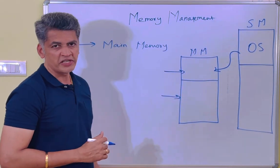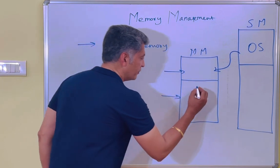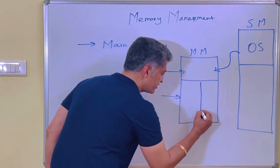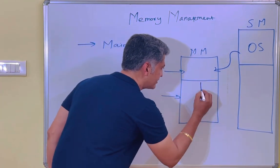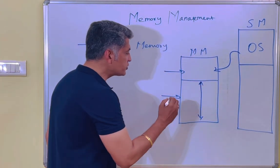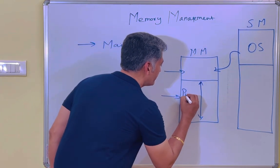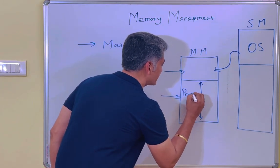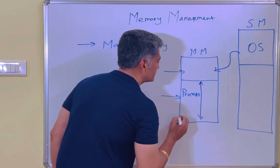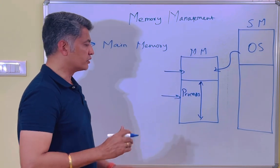So this is the major impact. Then the remaining portion is there in the main memory. This particular portion may be used for process execution.